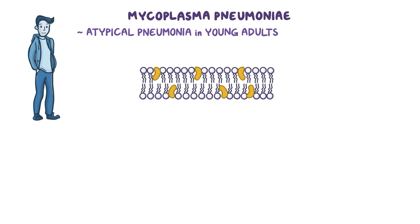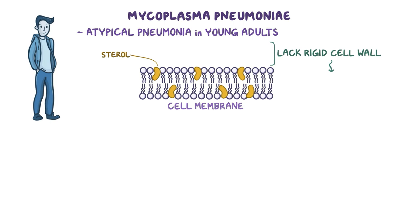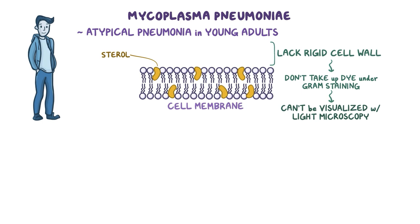Mycoplasma pneumoniae is a small bacterium which causes atypical pneumonia in young adults. Mycoplasma, as a genus, have a cell membrane that's packed with sterols, but they lack a proper rigid cell wall. Therefore they don't take up dye under gram staining, so they cannot be visualized with light microscopy.